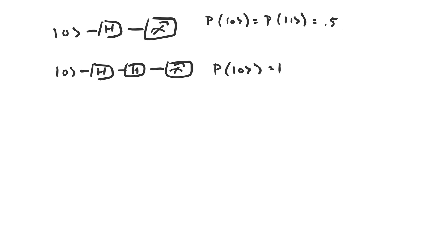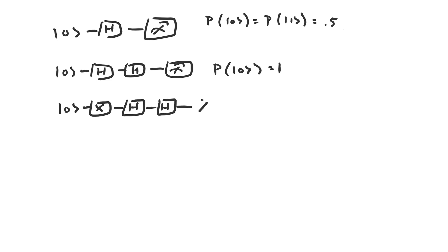Let's look at what happens when we apply a NOT gate prior to applying the two Hadamard gates. The qubit is initially in the state |0⟩. After passing through the NOT gate, it is in the state |1⟩. Then the two Hadamard gates effectively do nothing, so when we make the measurement, the qubit will be in the state |1⟩. The probability of measuring |1⟩ is 1.